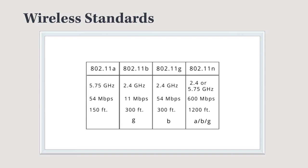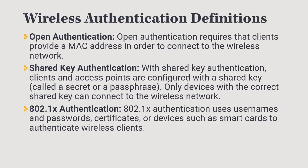802.11n gives us 600 megabits per second and can transmit up to 1,200 feet. It is backwards compatible with A, B, and G depending on how you configure the antennas. The 802.11ac standard has a transmission rate of 1.3 gigabits per second, or 1,300 megabits per second.